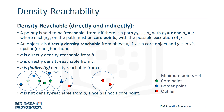A is directly density reachable from B. B is directly density reachable from C. A is indirectly density reachable from D. D is not density reachable from A, since A is not a core point.